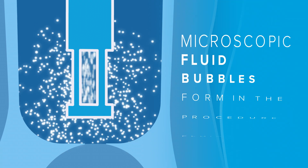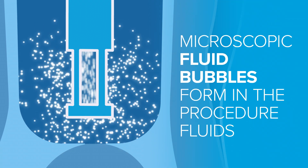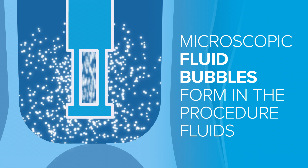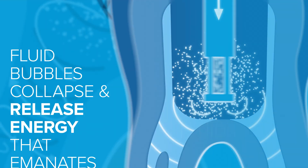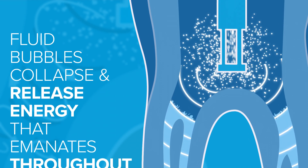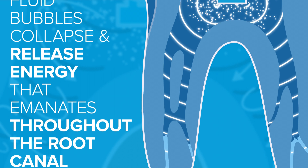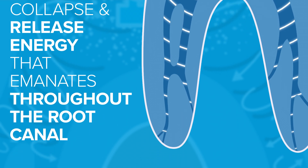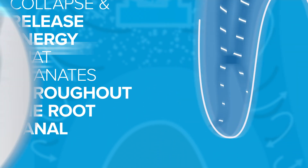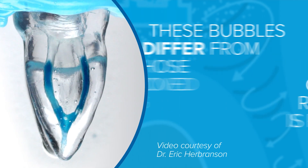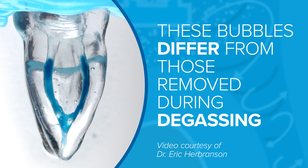Useful cavitation occurs as a result of the flow behavior inside the procedure instrument, which causes the formation of microscopic fluid bubbles inside the liquid. As fluids are delivered into the sealed environment of the root canal, millions of cavitation bubbles collapse per second. Each one releases acoustic energy that resonates with the natural frequency of anatomy and penetrates every feature of the root canal, including microscopic dentinal tubules. In contrast to the gas bubbles removed during the degassing process, these fluid bubbles help rather than hinder the deeper cleaning of the root canal.